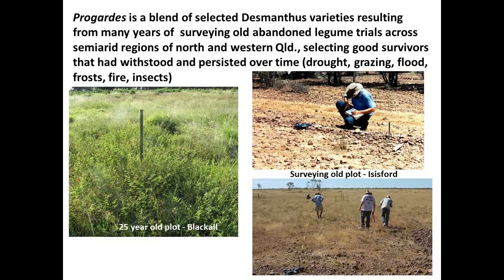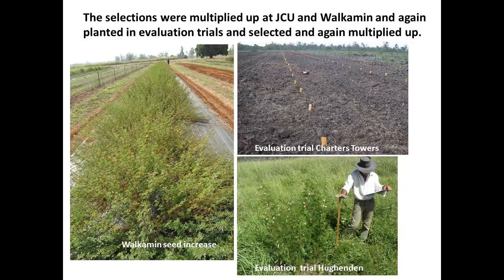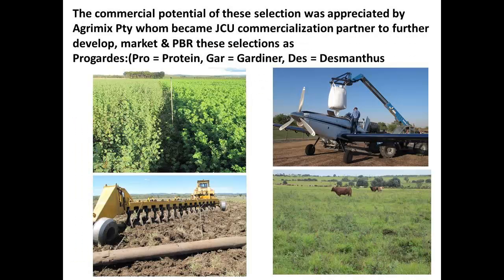Seeds and plants from those sites were collected and taken back to JCU, and once sufficient seed was available they were sent up to Kendrick's group at Walkamin for seed increase, and that seed was then put back into trials, for example around Charters Towers and Huwenden. The commercial potential of these selections was appreciated by Agrimix, who became JCU's commercialisation partner to further develop, market, and PBR these selections, which are now called Progardes — 'pro' for protein, 'gar' for Gardner, and 'des' for Desmanthus. You can see on the top left one of the seed crops up on the Atherton Tablelands.